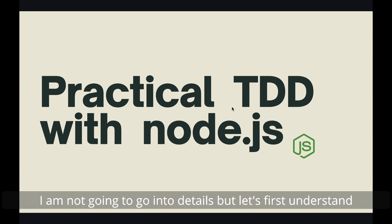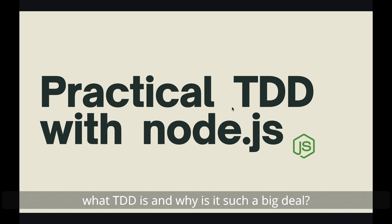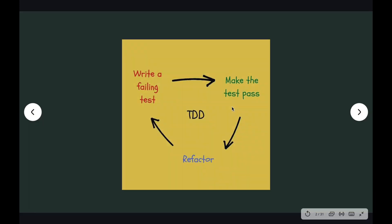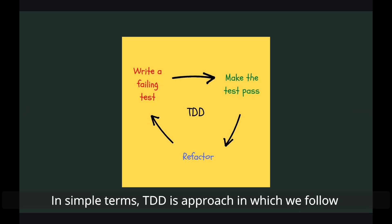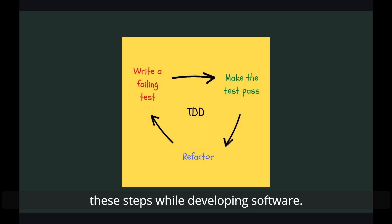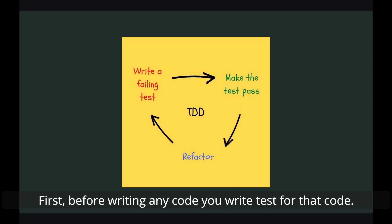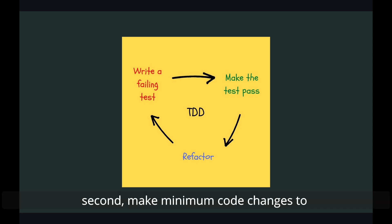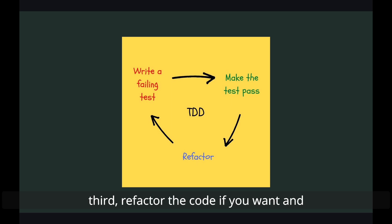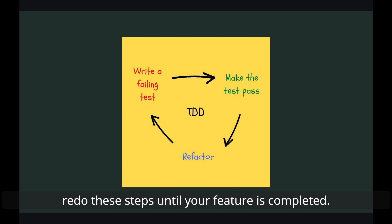Let's first understand what TDD is and why it is such a big deal. In simple terms, TDD is the approach in which we follow these steps while developing software. These are like 3 golden rules of TDD. First, before writing any code, you write a test for that code. Second, make minimum code changes to make the failing test case pass. Third, refactor the code if you want, and redo these steps until your feature is completed.